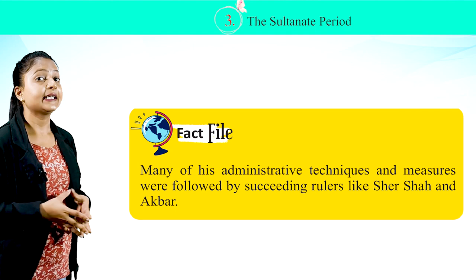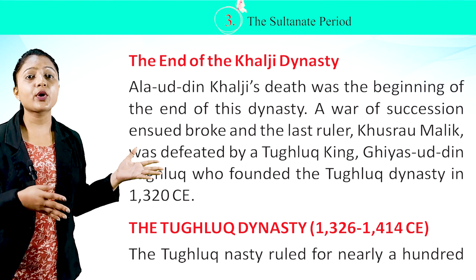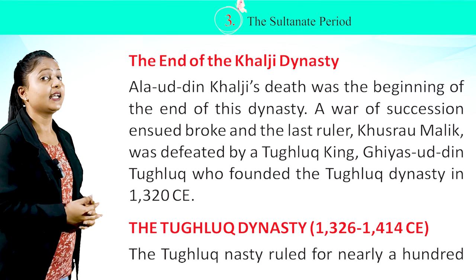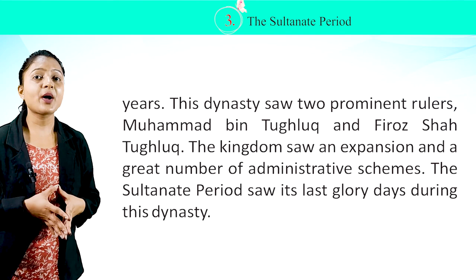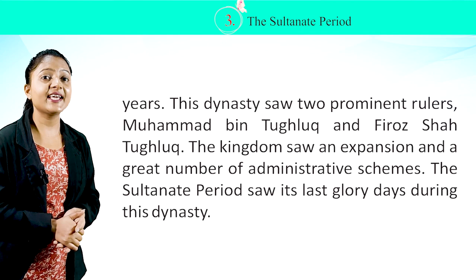The end of the Khalji Dynasty: Alauddin Khalji's death was the beginning of the end of this dynasty. A war of succession broke out, and the last ruler Khusrau Malik was defeated by a Tughlaq king, Giyasuddin Tughlaq, who founded the Tughlaq Dynasty in 1320 CE. The Tughlaq Dynasty ruled for nearly 100 years. This dynasty saw two prominent rulers, Muhammad bin Tughlaq and Firoz Shah Tughlaq. The kingdom saw expansion and a great number of administrative schemes, and the Sultanate period saw its last glory days during this dynasty. In this map, you can see the extent of the Tughlaq Dynasty.